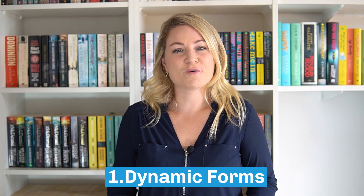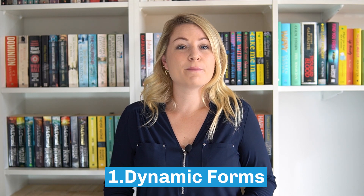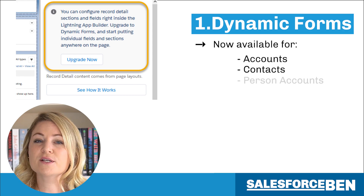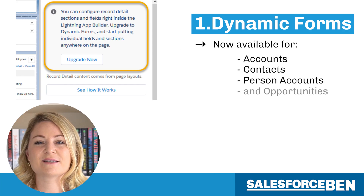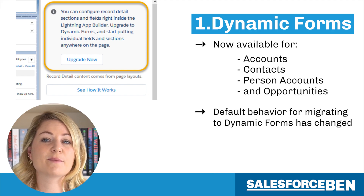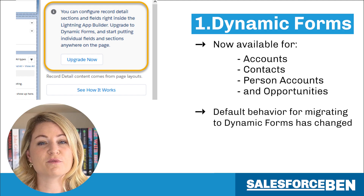First up, let's talk about the exciting updates coming to the future of page layouts. You know what I'm talking about — it's dynamic forms. It's no secret that dynamic forms for standard objects has been in the pipeline for a while, and they're now available for accounts, contacts, person accounts, and opportunities. As well as this, the default behaviour when migrating to dynamic forms has changed. The option to migrate fields and sections into an accordion component to improve page performance is no longer selected by default.